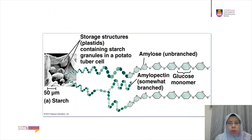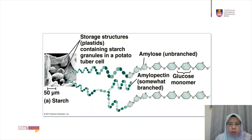This figure shows the different structures of amylose and amylopectin, with an example of the storage structure in a granule in a potato. Looking at the amylose structure, it is unbranched. Amylopectin, by contrast, is branched.